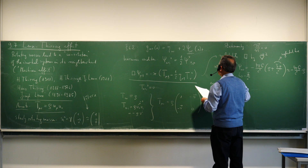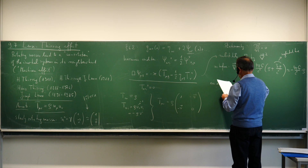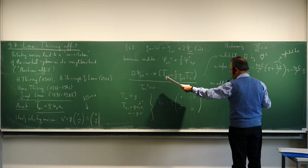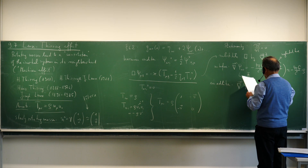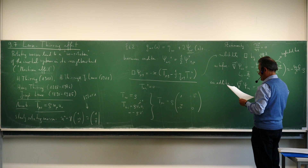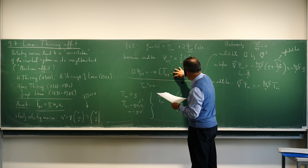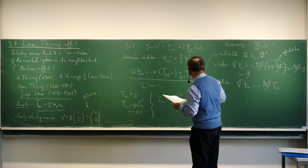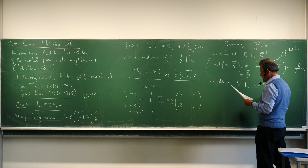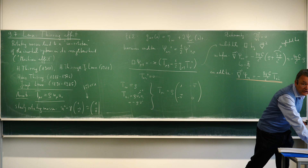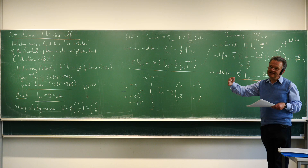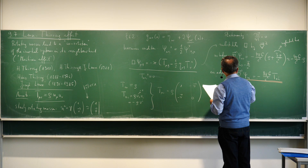The new thing comes from the non-diagonal terms. Inserting the 0i components and taking the trace: Δψ_{0i} = −8πG/c² T_{0i}. This is the equation we have to address, and it will eventually give rise to the Lense-Thirring effect.